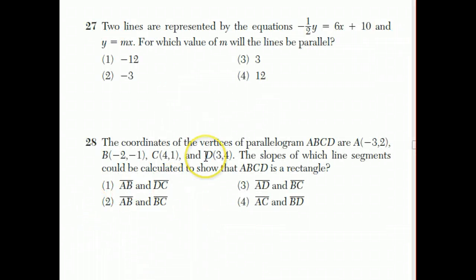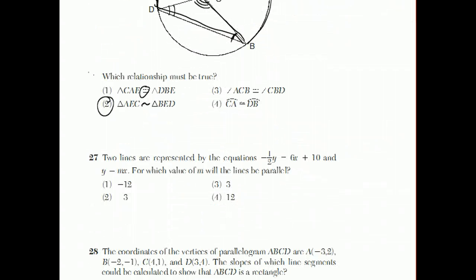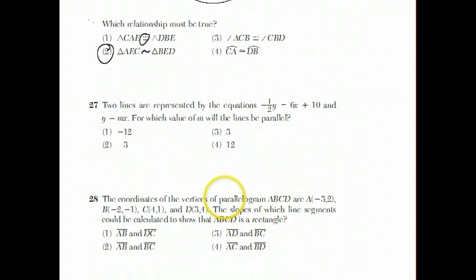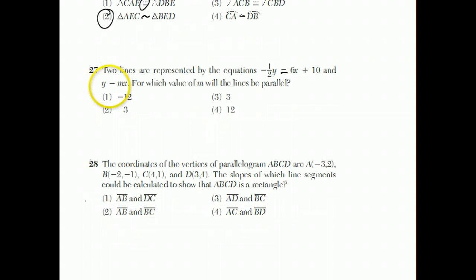Question 27 reminds me of something from a question a few back. What is the slope of this line, basically? Because when two lines are parallel, they have the same slope. So let's take a look here. If the original line is negative one-half Y equals 6X plus 10.